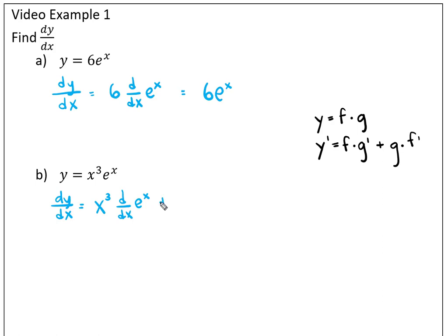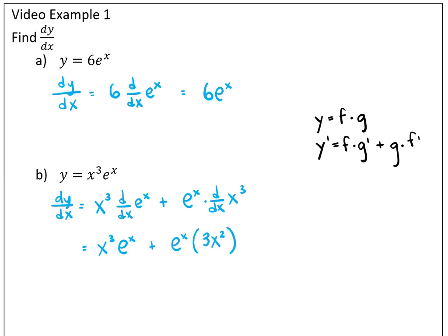Let's simplify. We get x cubed times the derivative of e to the x, which is e to the x, and then e to the x times the derivative of x cubed. Notice how they both have e to the x and x squared in common. Factoring those out, we get x squared e to the x times x plus 3, giving us our derivative.